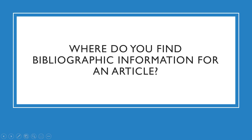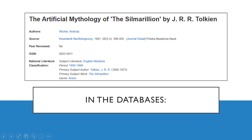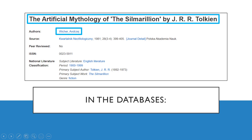So where do you find bibliographic information for an article? Well, there are three basic places to find an article's bibliographic information. First, you can find it in the database you're using to find the article. It will be included on the article's record page, like this one for the article The Artificial Mythology of the Silmarillion, though it may be split up between the author name, the article title, and the journal title, volume, issue, and page numbers.